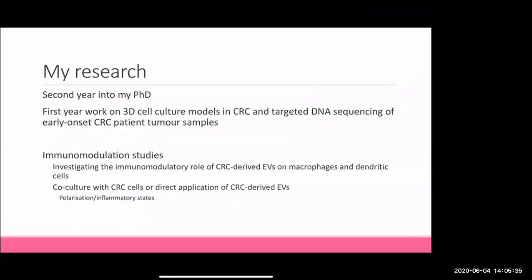I'll mention a little bit about my research and why I picked this paper. My first year work was on 3D cell culture models. We work with colorectal cancer, and I did some targeted DNA sequencing of early onset colorectal cancer patients looking at the genetic profile of their tumour samples. I'm just starting my new project - the main part of my PhD - which is immunomodulation: investigating the immunomodulatory role of colorectal cancer-derived EVs on macrophages and dendritic cells within the tumour microenvironment.